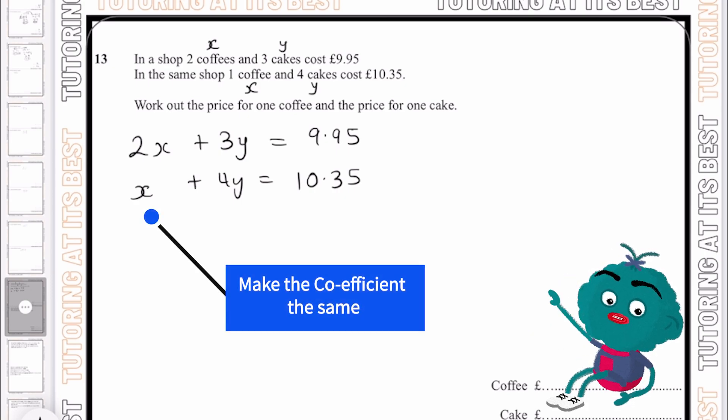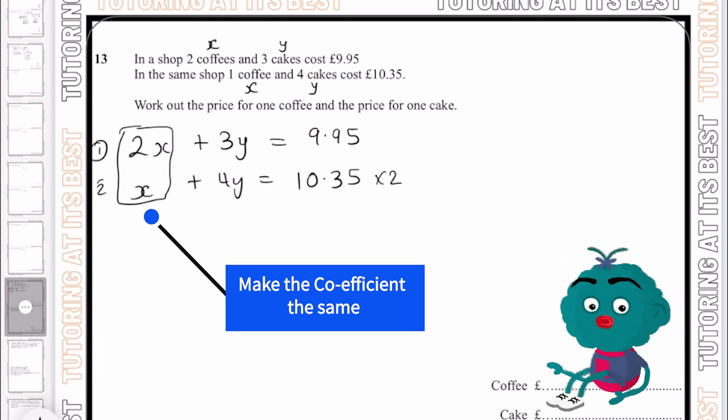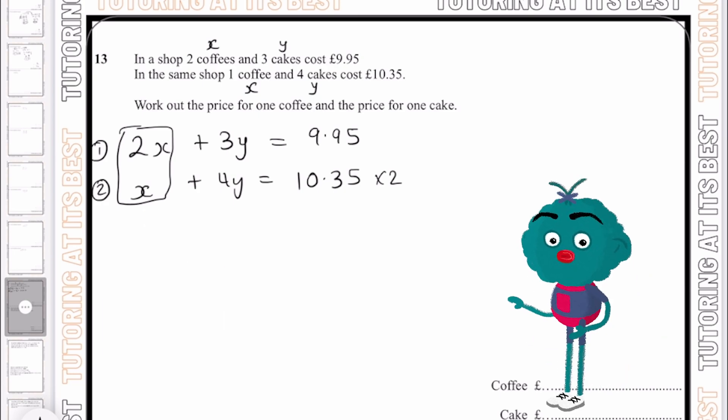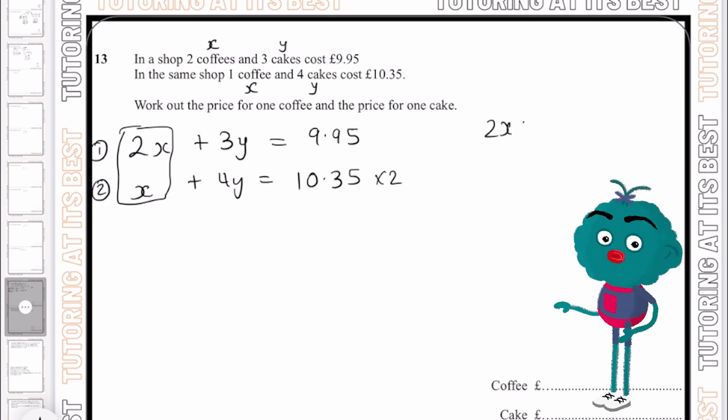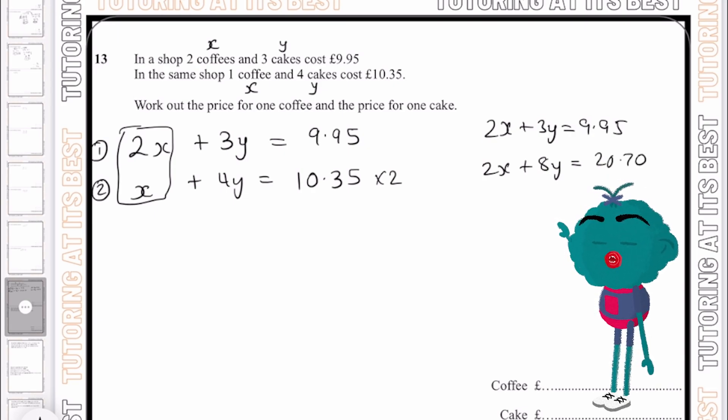Remember now, I need to make my coefficient the same. So I'm going to multiply the second equation by two. Let's write out 2x plus 3y equals £9.95. I will then get 2x plus 8y, which equals £20.70. And by doing so, I can simply subtract equation 1 from equation 2.